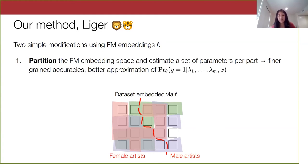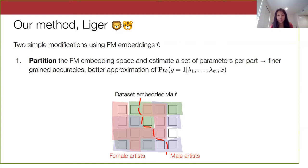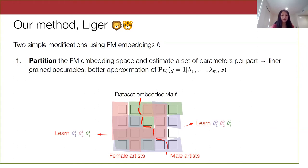Here I'm referring to the dataset mapped into the embedding space of the foundation model. Our method partitions this embedding space — for illustration, just a red line — and in these embedding spaces there might be a natural division between, for example, spam comments on music videos by female artists versus spam comments on music videos by male artists. Then we learn a set of parameters on each of these subgroups, with the hope that these parameters will better capture variation in the data.